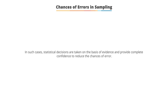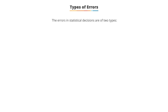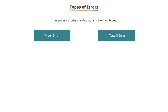In such cases, statistical decisions are taken on the basis of evidence and try to provide complete confidence to reduce the chance of error. There are two primary types of error in statistical decisions: type 1 error and type 2 error. These tend to be very confusing, so please don't be overwhelmed — you may often mix them up in your head. That happens. No matter if you're a first-time student or a postdoc, most people tend to mix them up at some point.